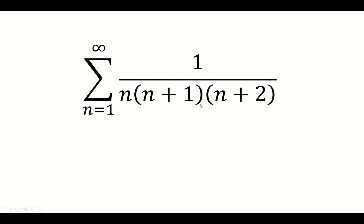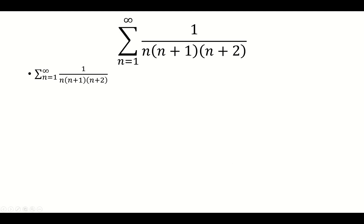We want to find the sum from n equals 1 to infinity of 1 over n times n plus 1 times n plus 2. Notice the denominator is factored, so we can use partial fraction decomposition.